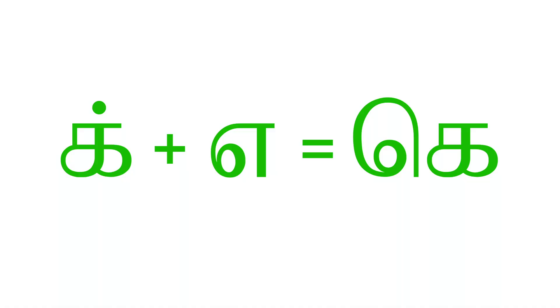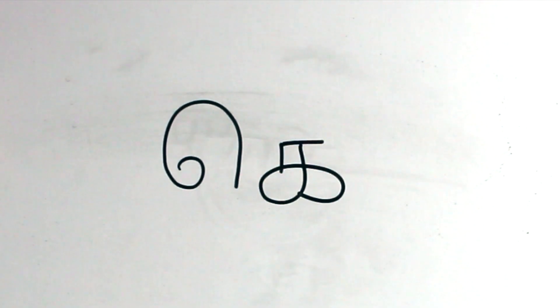Next we have ke. We get ke by combining ik and e. You first write the otta combo and then follows the ka. There we go. Let's write it one more time.